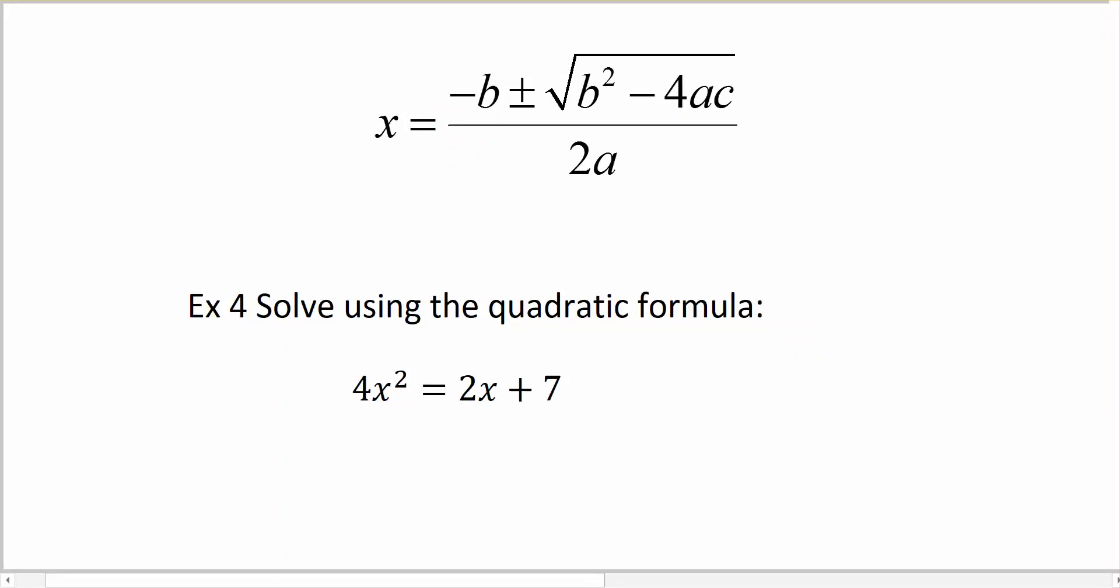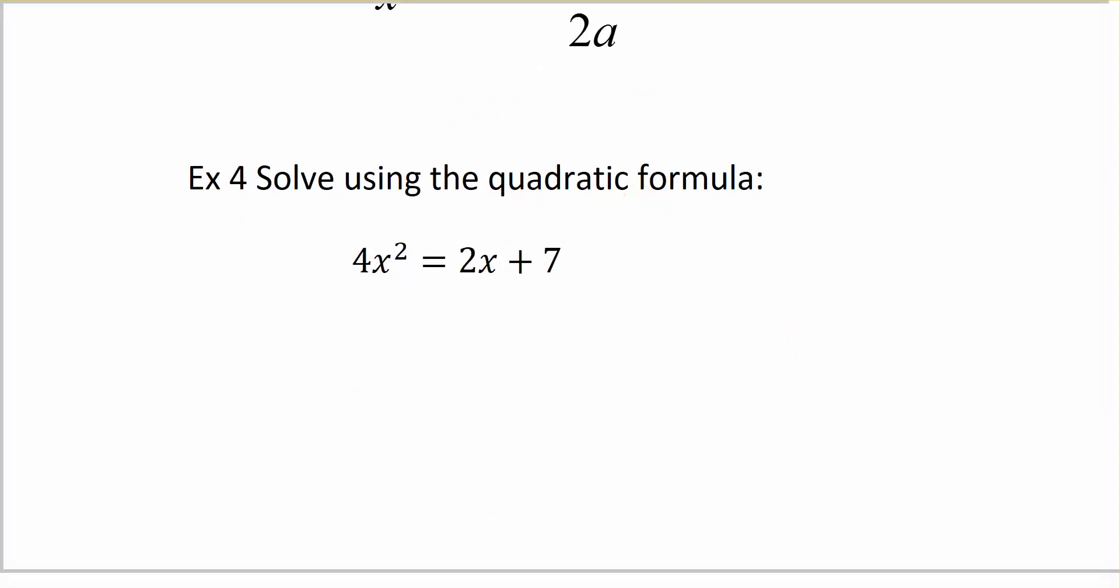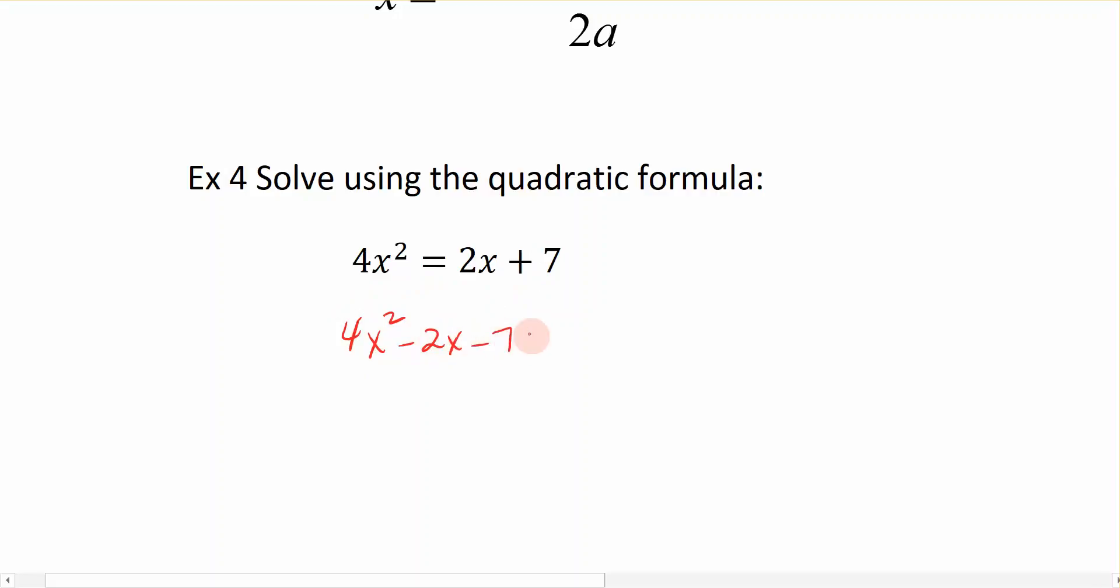So I'm going to subtract 2x and 7 to the left. And I get 4x squared minus 2x minus 7 is equal to 0. This is what I am now going to substitute into or pull from in my quadratic formula.